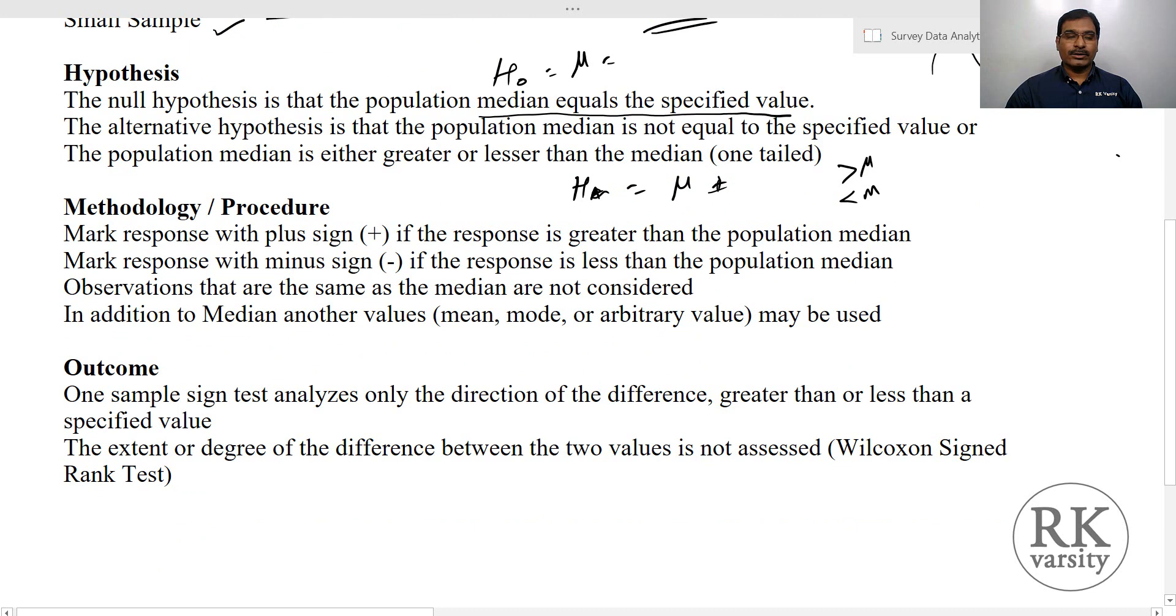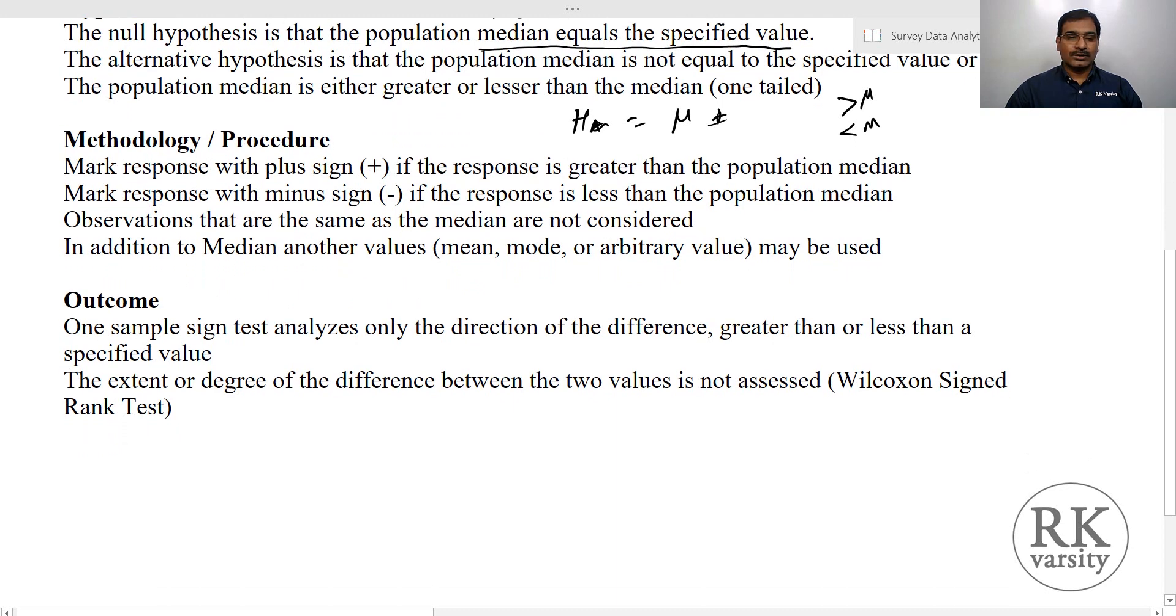How we are going to calculate the procedure for a sign test is, in case of sign test, it accepts only two values, two signs, that is a plus sign and minus sign. This plus sign and minus sign is assigned to a value when comparing with a median value. Let's say a median income of individuals is 10,000 rupees. Now if an income of an individual is 11,000, then we assign a plus sign here, because this is greater than the median value. Next, if an individual's income is less than 10,000, assuming it is 9,000, then we assign a minus sign.